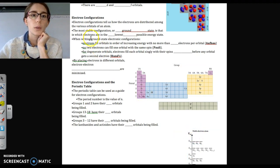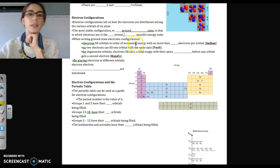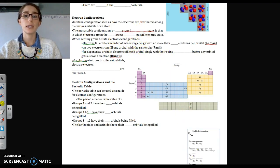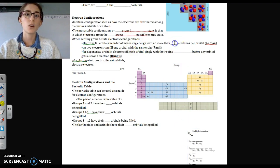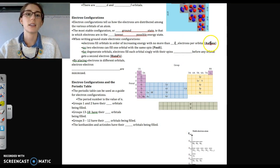So when we are writing electron configurations, there are a few rules that we have to abide by. So electrons fill the orbitals in order of increasing energy. So we start from the bottom of the diagram, work our way up with no more than two electrons per orbital. And we kind of mentioned that today in class, and that's the Aufbau principle.